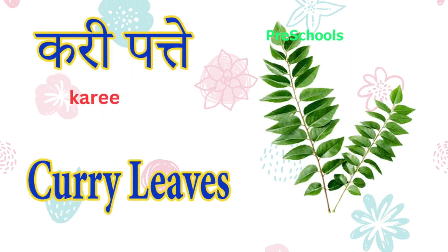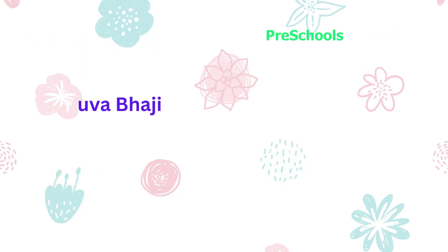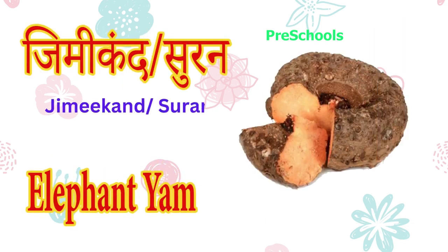Curry patte matlab — curry leaves. Suwa bhaji matlab — dill leaves. Sahajan matlab — drumstick. Jimikan or suran matlab — elephant arm (yam).